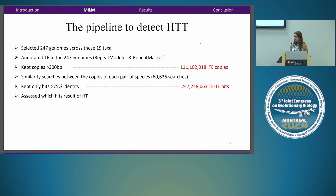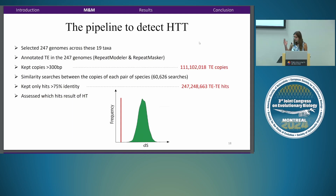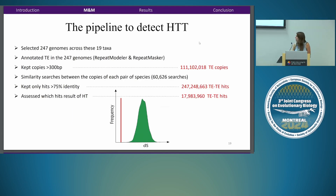To know whether similar copies are due to horizontal transfer or vertical inheritance, we calculated the dS — synonymous distance — of each hit and compared it to the distribution expected under vertical inheritance. If the dS was significantly under that distribution, we concluded the hit resulted from horizontal transfer. Doing this with all hits, we determined that about 17 million of the hits resulted from horizontal transfer.